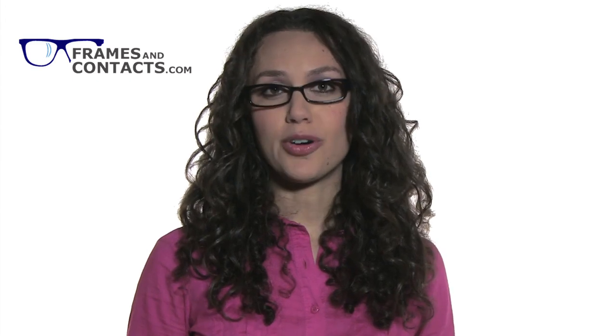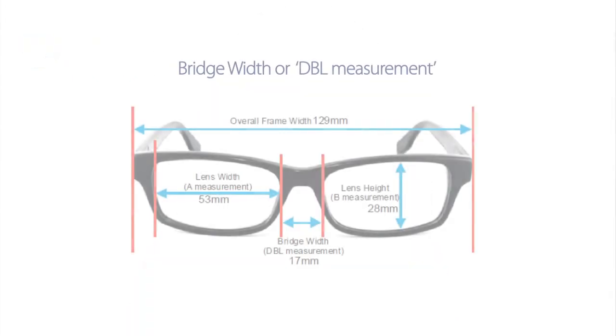This measurement is only important when ordering your bifocal or progressive lenses. Bridge width, or DBL measurement, is the distance in millimeters between the two lenses. It is measured between the two closest points of the lenses.